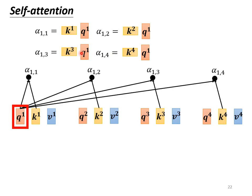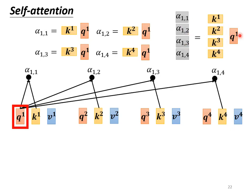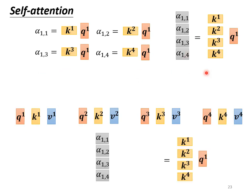These four steps can be combined into one operation—simply multiplying a matrix and a vector. We put k1 to k4 together as rows of a matrix, and multiplying this with the vector q1 gives us the attention scores α1,1 to α1,4.